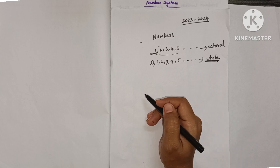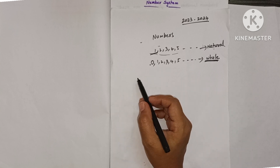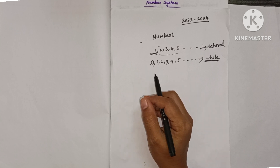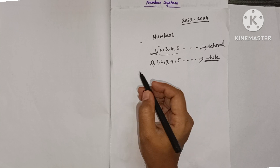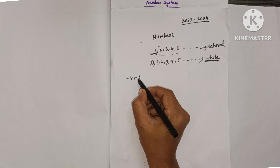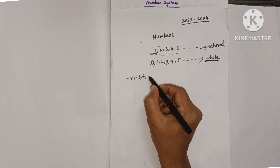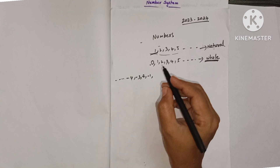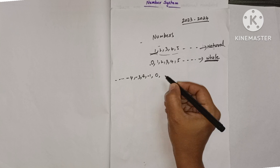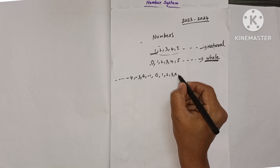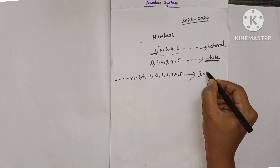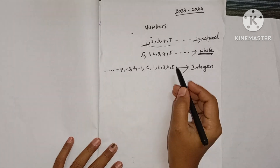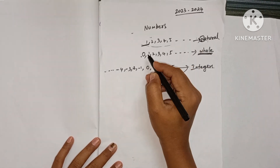Now the chocolates are finished and you want more, so you borrow some from your friend. Borrowing introduces negative numbers — minus three, minus two, minus one. So negative numbers, zero, and positive numbers (counting numbers) together are called integers.